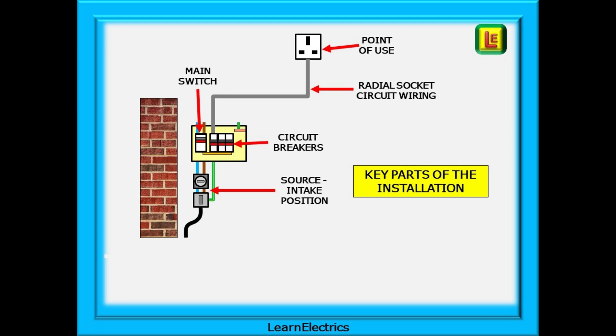We have the source or intake position where the supply comes into the property and then the main switch in the consumer unit, the place at which we will measure the earth fault loop impedance or Zdb. A collection of circuit breakers is next and then out to the point of use on the radial socket circuit wiring in this case.